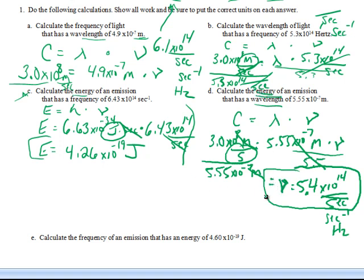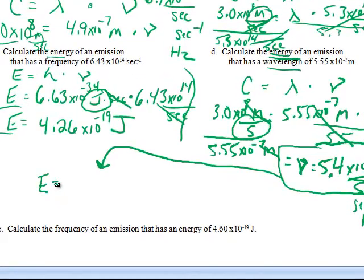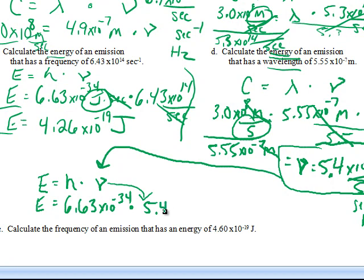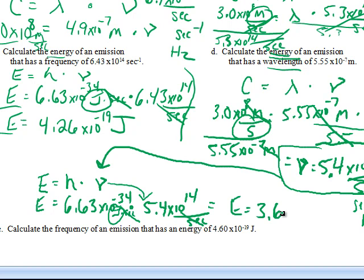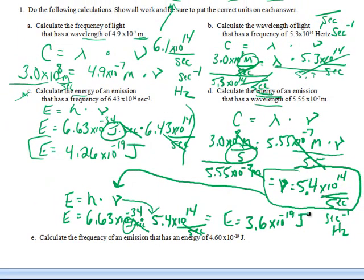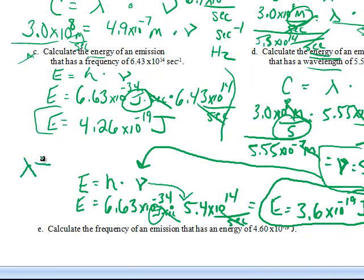Now the problem says calculate energy, so this is the second part. Take the energy formula - Planck's constant times frequency - and plug in Planck's constant: 6.63×10⁻³⁴. In the frequency spot, plug in what we just solved for: 5.4×10¹⁴ per second. Planck's constant has joule·seconds for units, so seconds on top and seconds on the bottom cancel, leaving joules. Energy equals 3.6×10⁻¹⁹ joules. That's a two-step problem - from wavelength to frequency, then from frequency to energy.